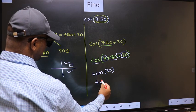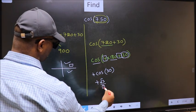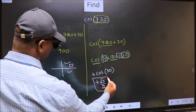So plus cos 30 is root 3 by 2. This is our answer.